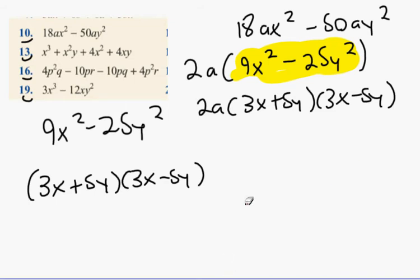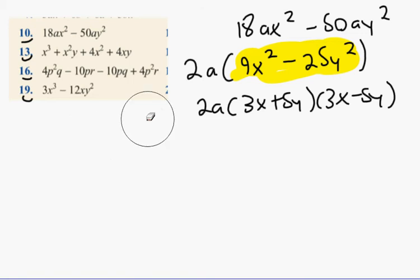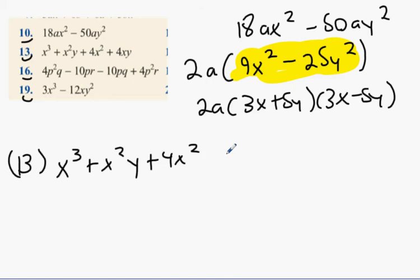Next question then. That was question 10. Now we're on to question 13. In question 13, we have X cubed plus X squared Y plus 4X squared plus 4XY. There's two ways this can be done. You can take the X out at the very beginning.